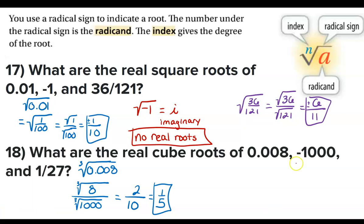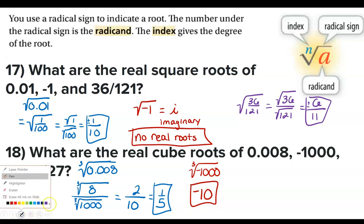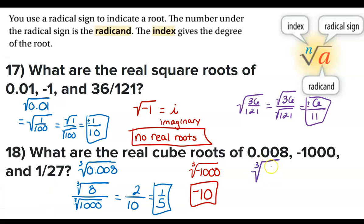The cube root of -1000: you only get imaginary numbers from even roots of negatives. This is an odd root, so this is just equal to -10. And the last problem: the real cube root of 1/27 — that's the cube root of 1 over the cube root of 27, which equals 1/3.